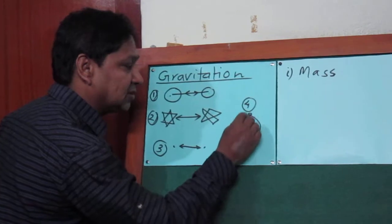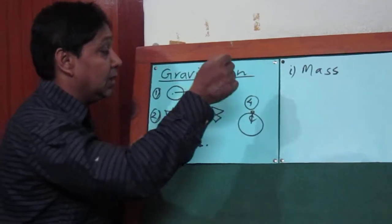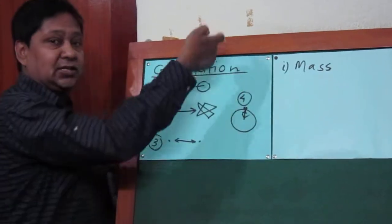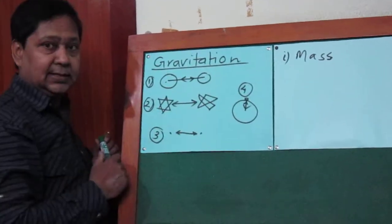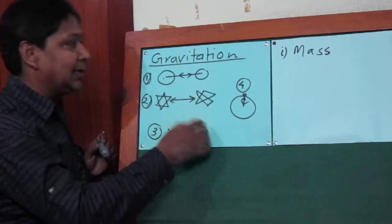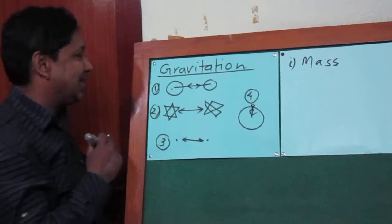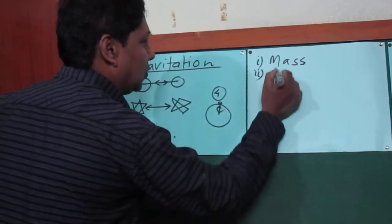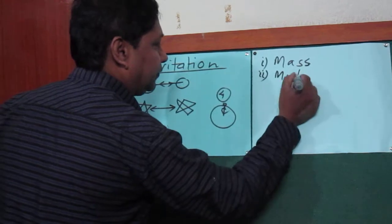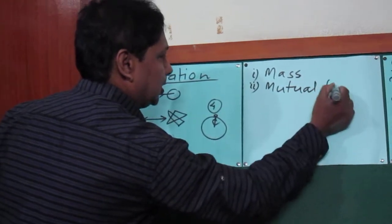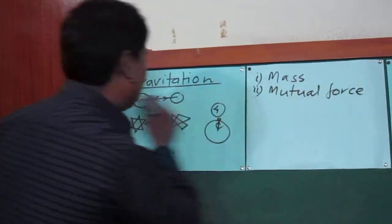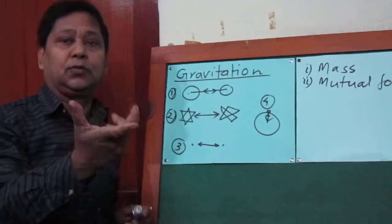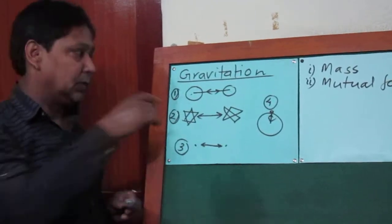Not only does the earth attract the body lying on its surface, but the body lying on the surface of the earth also attracts the earth towards its center. That's why the second important characteristic of gravitation is mutual force — the gravitational force between any two bodies is actually a mutual force.